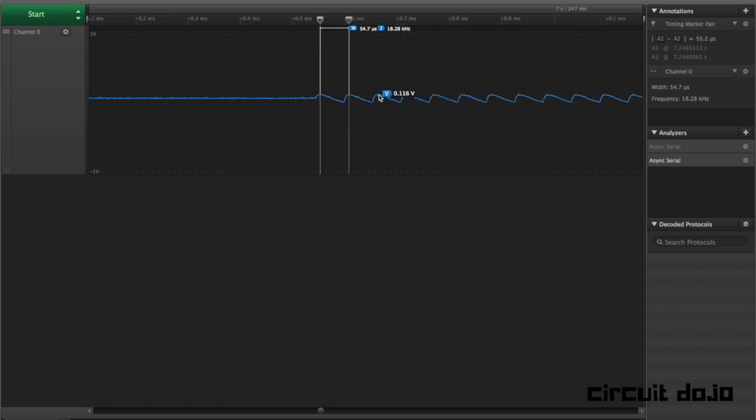And it's jumping from about 115 milliamps to almost zero, about eight. I'm assuming that eight or nine milliamps is actually just the quiescent current of the driver itself.